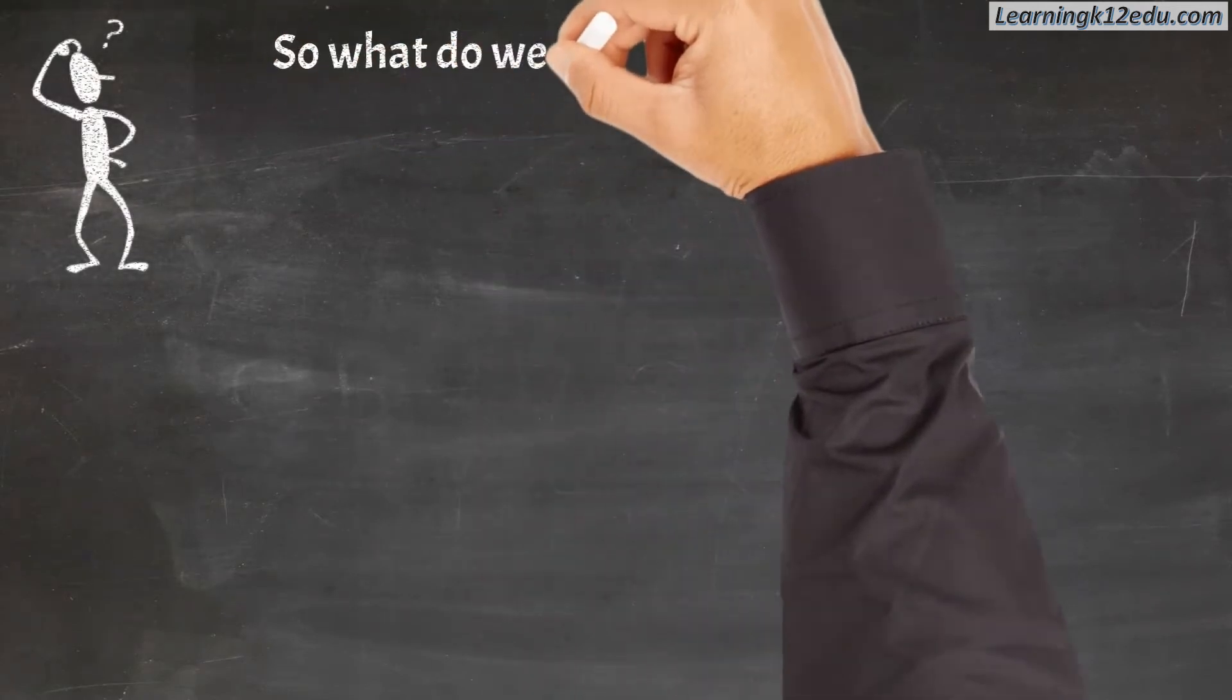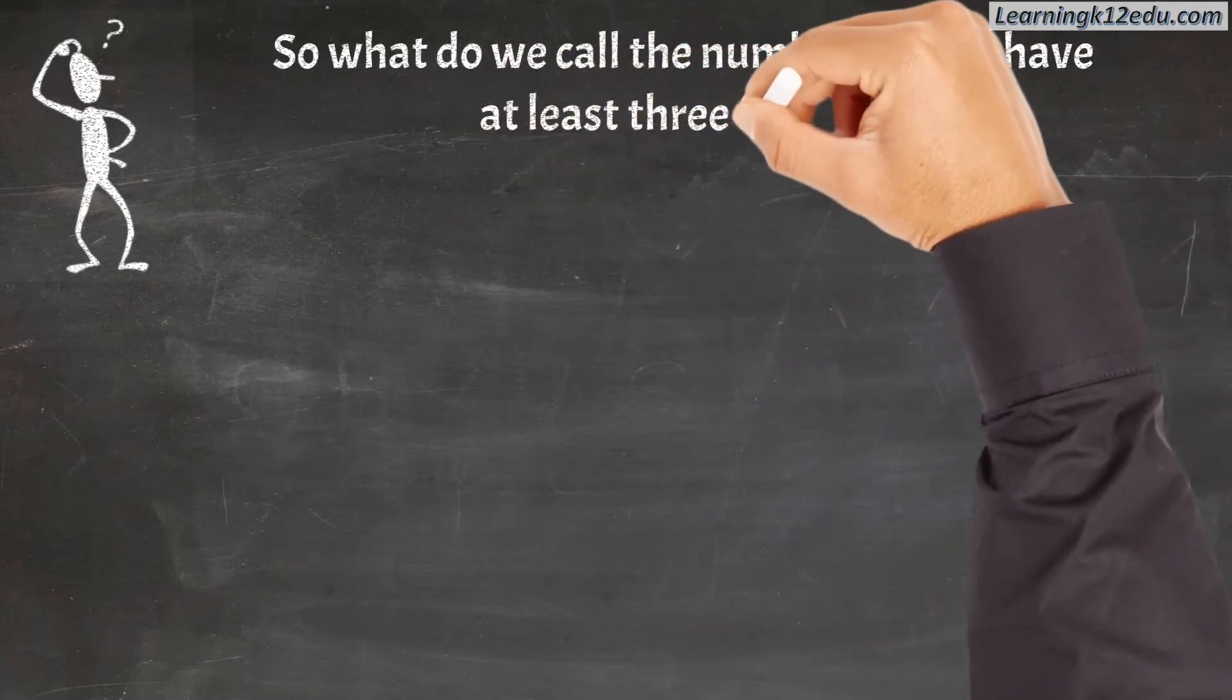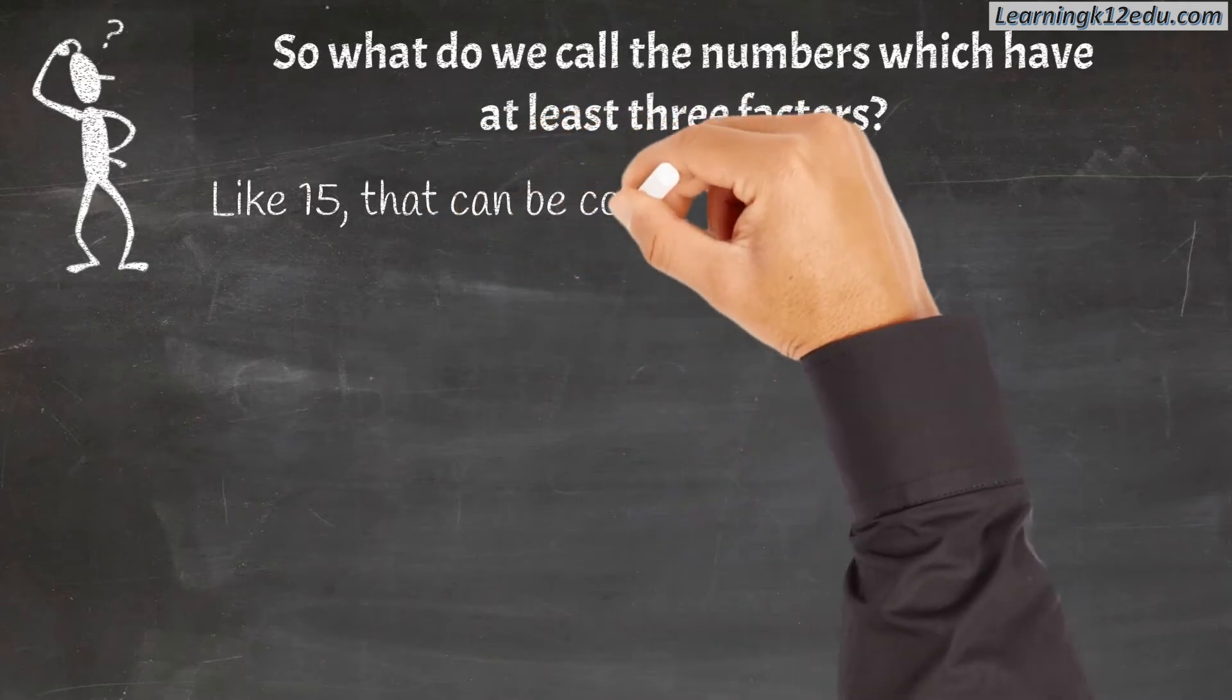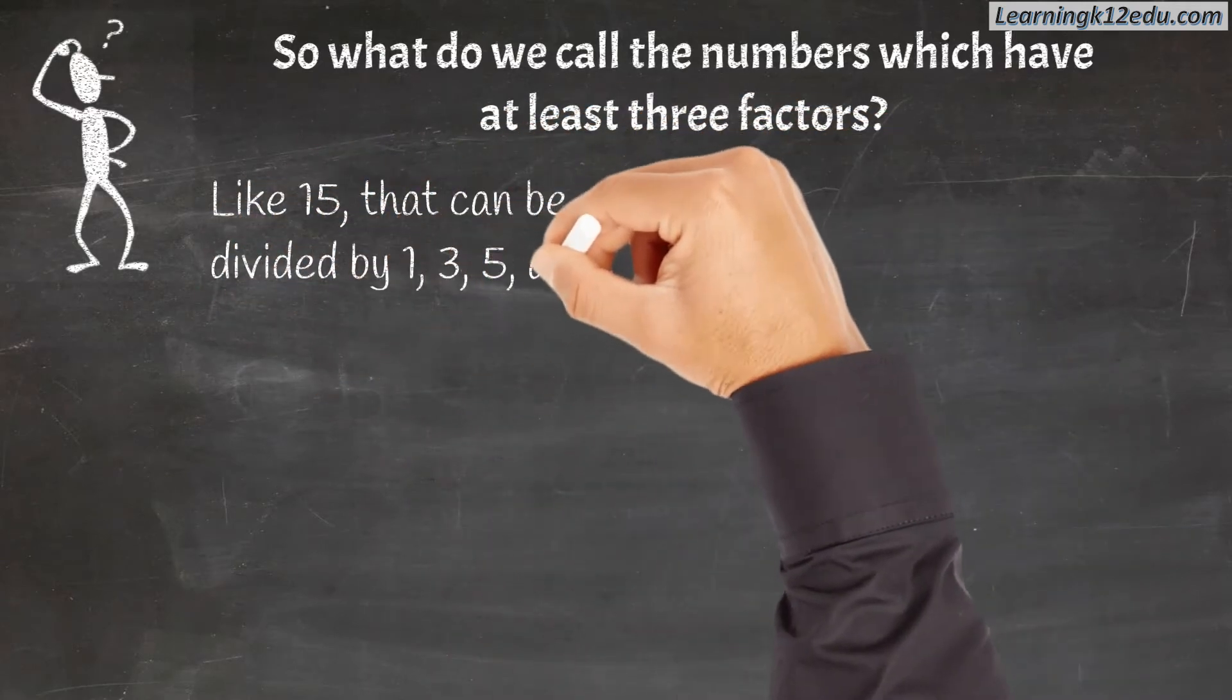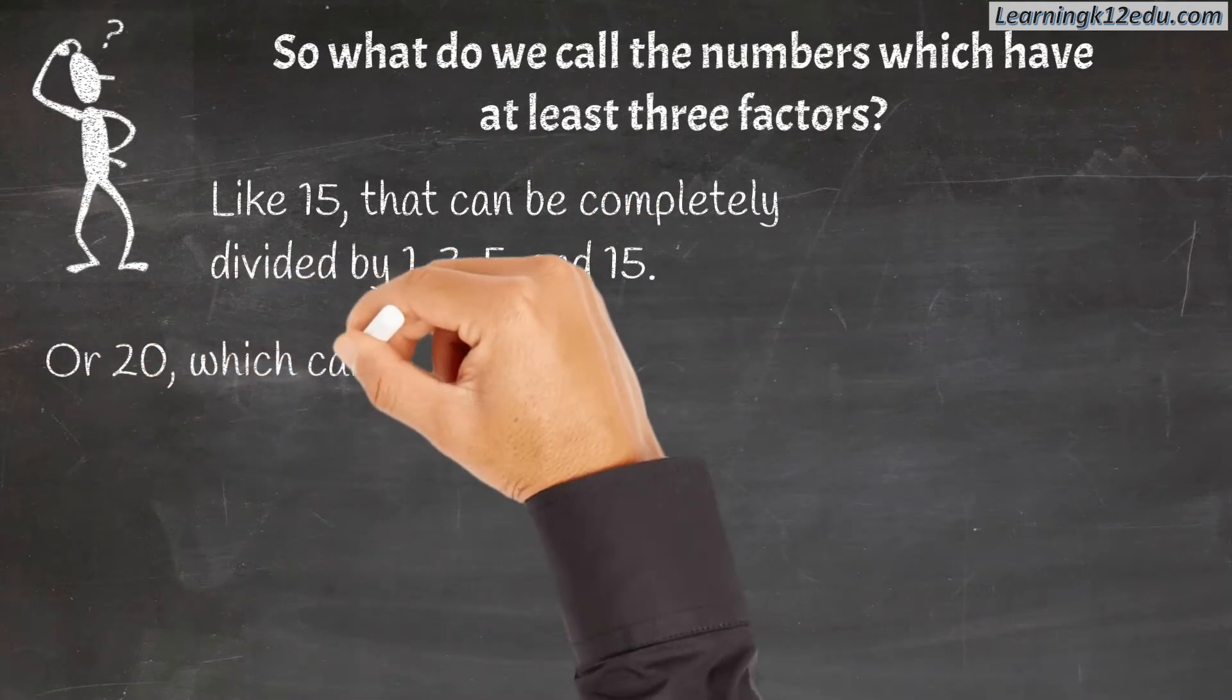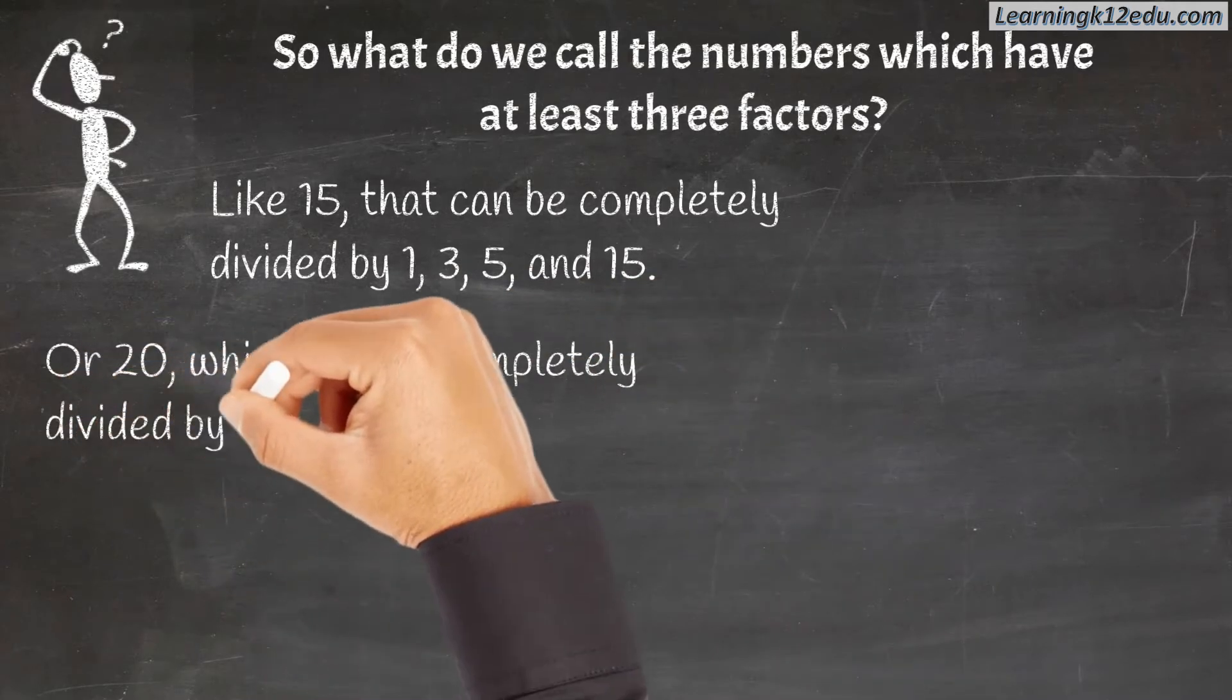So what do we call numbers which have at least three factors? Like 15, that can be completely divided by 1, 3, 5, and 15, or 20, that can be completely divided by 1, 2, 4, 5, 10, and 20.